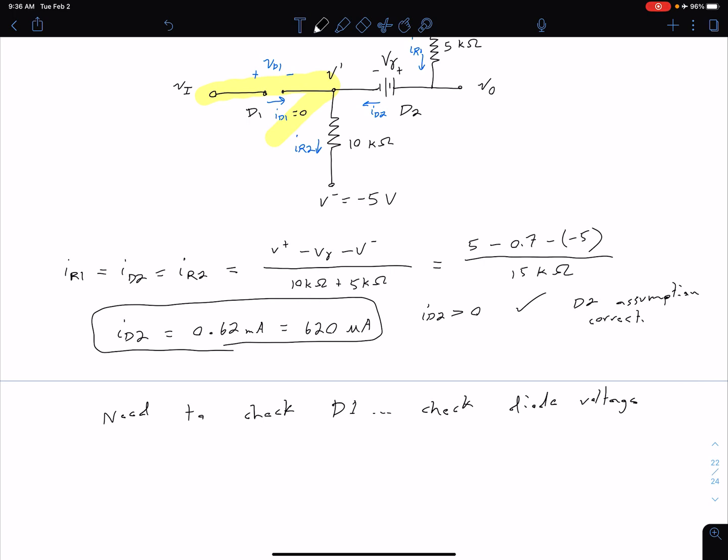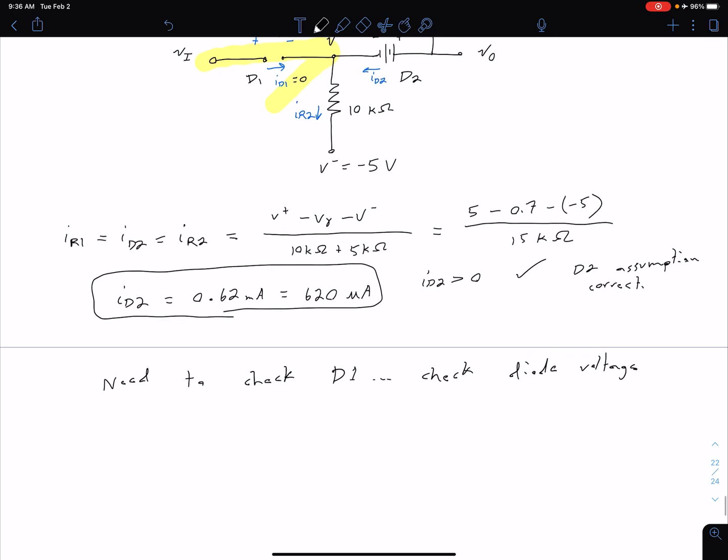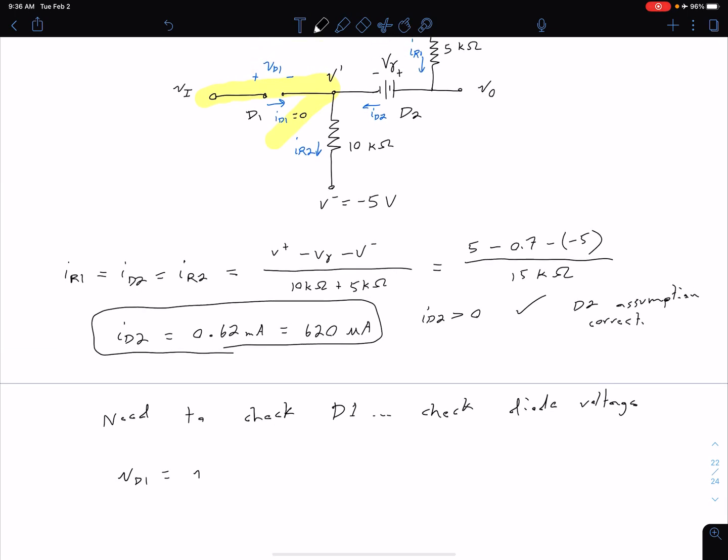I'm kind of going to do this in almost sort of two steps is we can say that our V_D1 is equal to our input voltage V_I minus that V'. Well of course our V_I is zero so that's just negative V'.